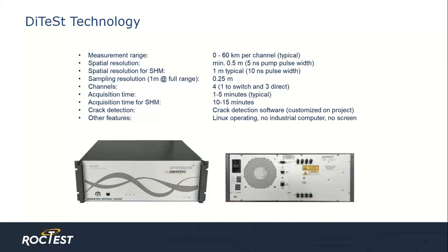These are the specifications of the DITES interrogator for distributed strain and temperature monitoring. The accuracy of the instrument is given by the setting of the unit — that is, how the instrument is configured for measurements. The instrument setting considers four variables: acquisition time, spatial resolution, absolute accuracy, and measurement range. These four variables are interdependent, and accuracy, for example, is the result of the setting of the other three variables. In the literature, we always mention the accuracy of 20 microstrain as a typical value, but this can vary according to the measurement setting.